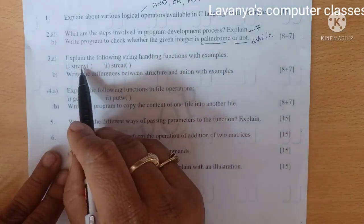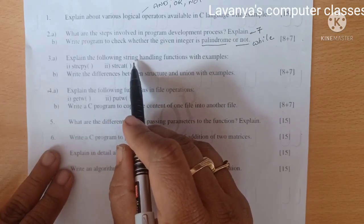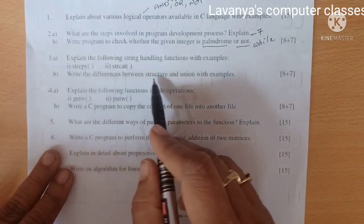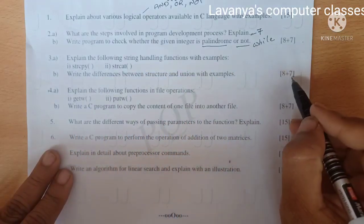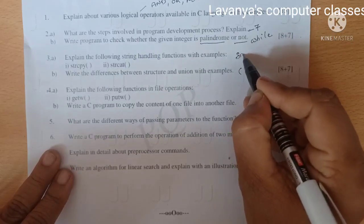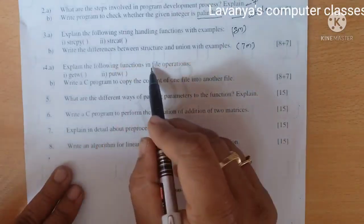3A is explain the following string handling functions with example. They are asking only 2 string handling functions. One is strcpy, second one is strcat. Strcpy means string copy, strcat means string concatenation. Just explain these 2 with syntaxes and also example programs.